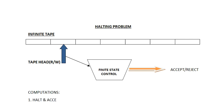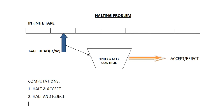There are three types of computations. First is halt and accept — the Turing machine accepts a string and halts in a particular state. Second is halt and reject — the string does not belong to the language, the Turing machine is unable to accept it, rejects it, and halts in a particular state. Third is loop — the machine will never halt and keeps going in an infinite loop without halting in any state.